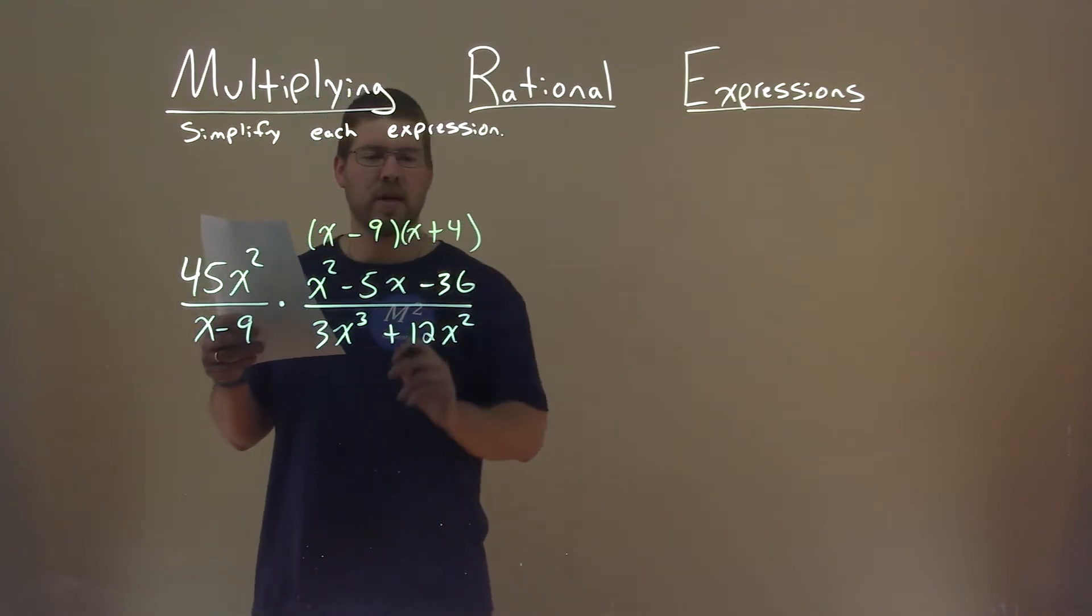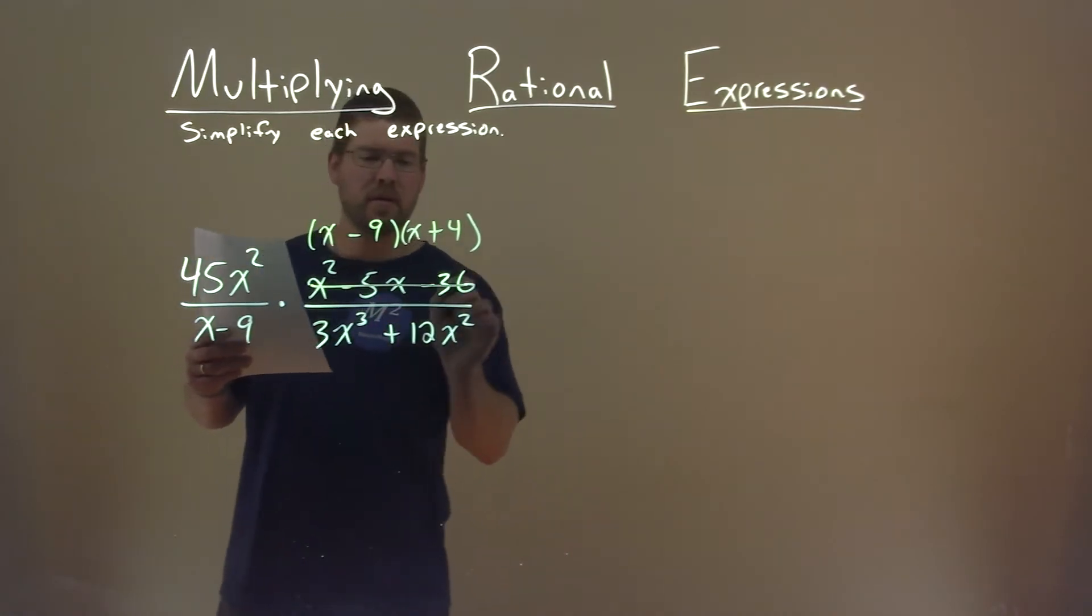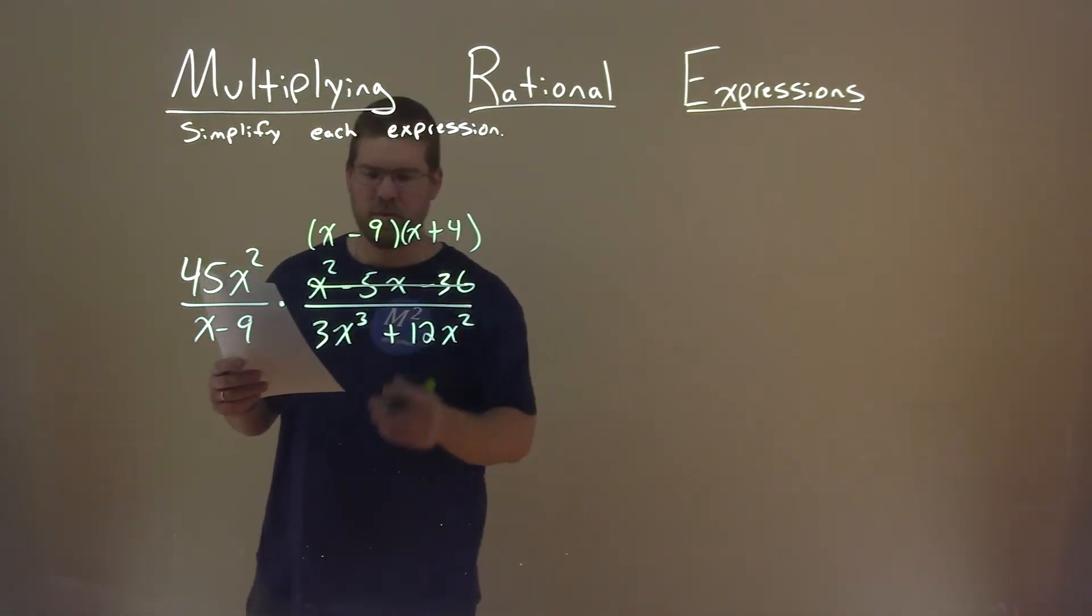Negative 9 times 4 is negative 36. Negative 9 plus 4 is negative 5. So we'll replace it with our factors.